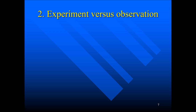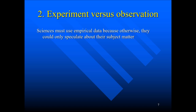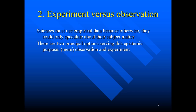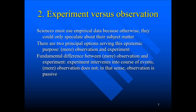Now I come to a distinction that is very important: experiment versus observation. In the empirical sciences, sciences must use empirical data — they can't simply speculate about theories and models. There are two principal options for generating empirical data: mere observation and experiment. Sometimes people are not careful in distinguishing these two ways and speak about experiments in cases where it's really only observation. The principal difference is that an experiment intervenes into the course of events, whereas mere observation does not — observation is passive.